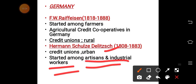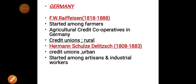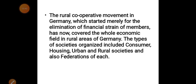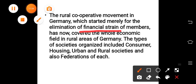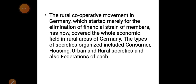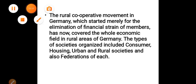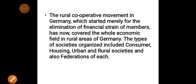Hermann Schulze also created credit unions but in urban areas — in towns and cities — focused on artisans and industrial workers. For example, he created societies that provided raw materials in bulk for shoemakers. Raiffeisen's model, though it came after Schulze's, was more influential and widespread. Over time in Germany, the movement evolved from credit cooperatives to consumer cooperatives, housing cooperatives, and more in both urban and rural settings.